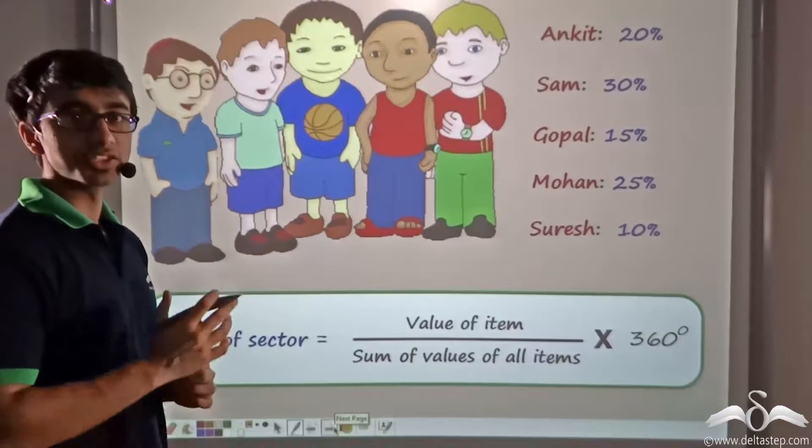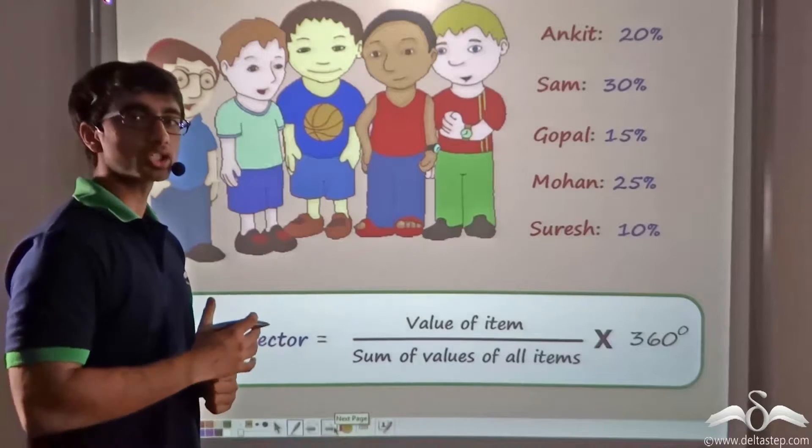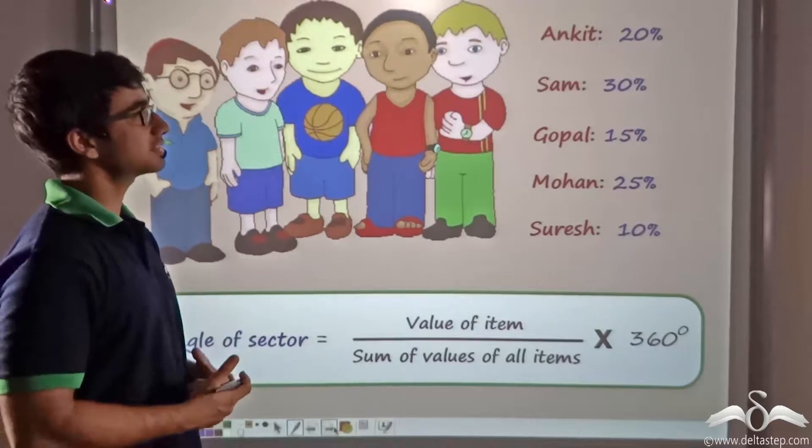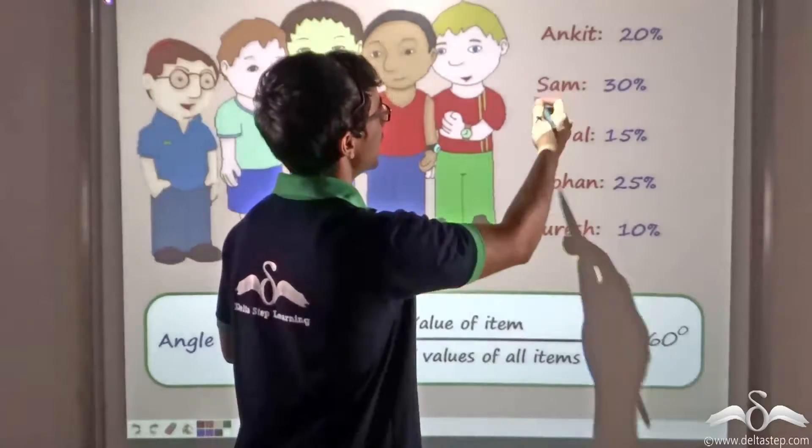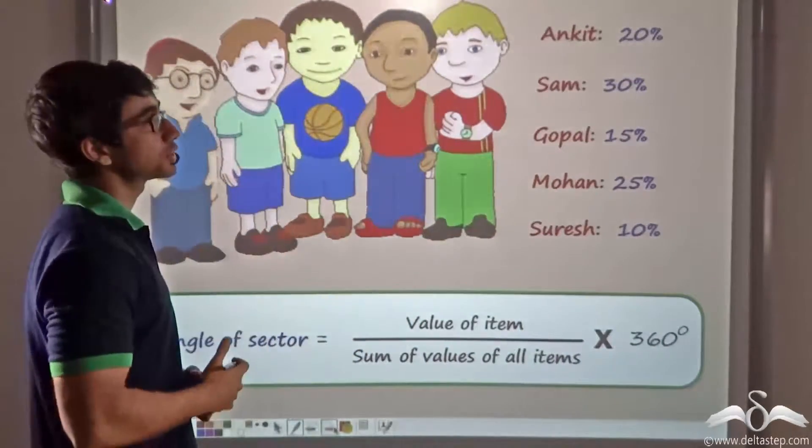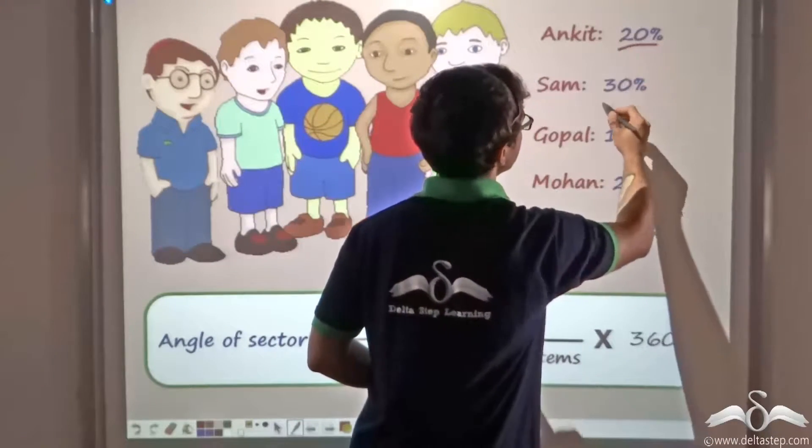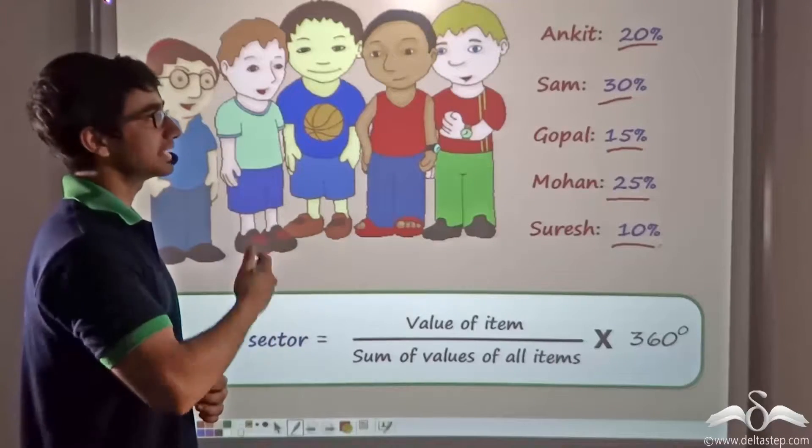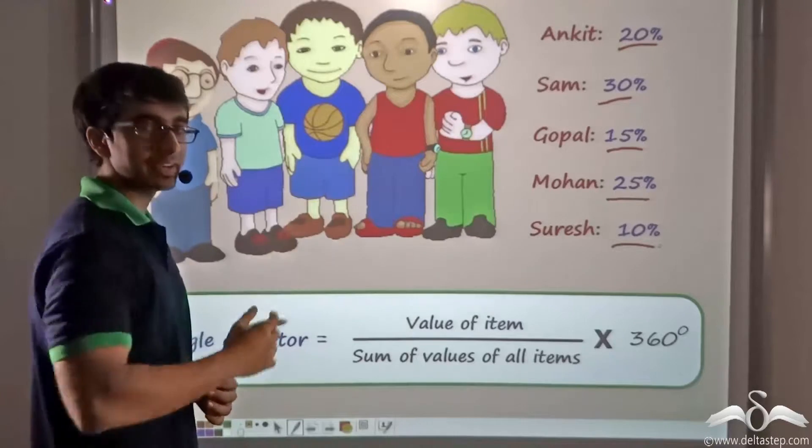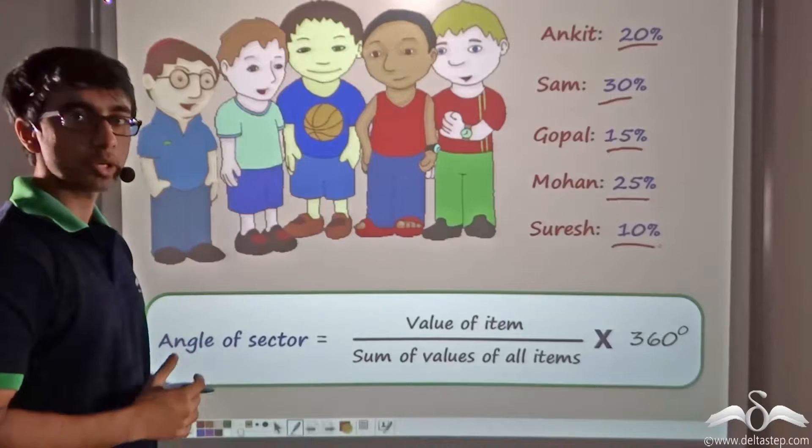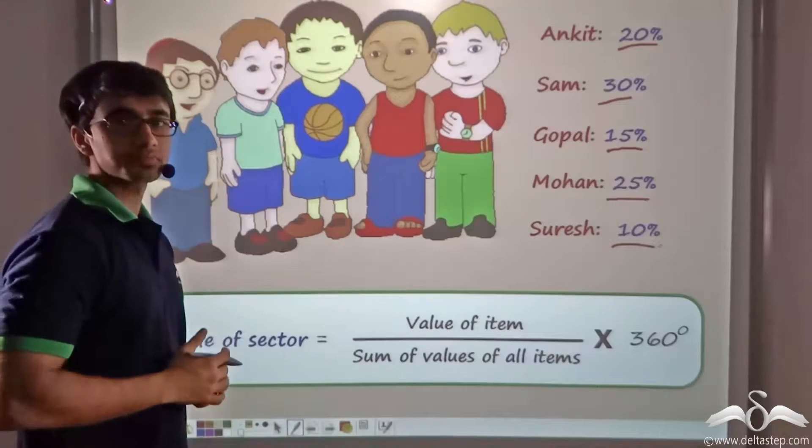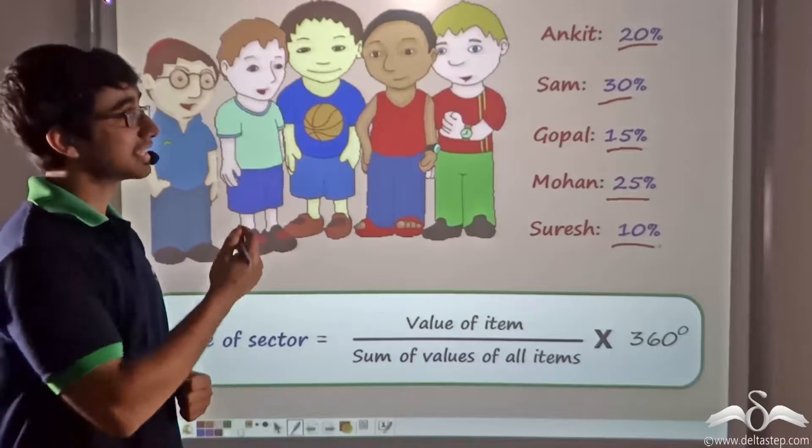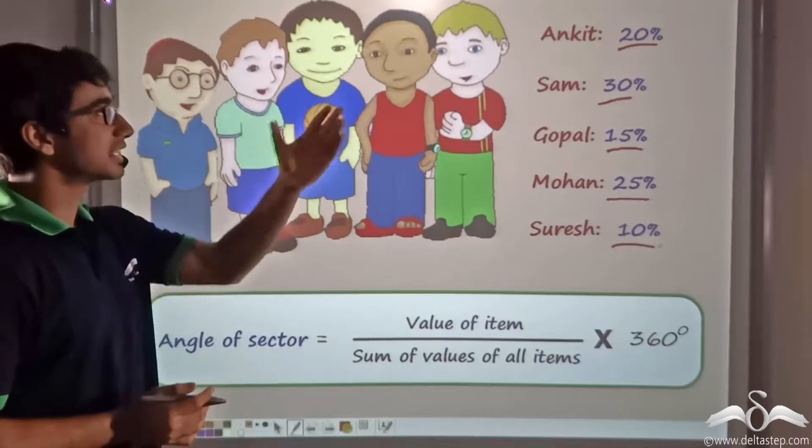We have a certain situation. A farmer wanted to leave behind his circular plot of land to his five sons. The farmer wanted to divide this circular plot of land between his five sons in the following percentages: Ankit, Sam, Gopal, Mohan and Suresh. These sons were to receive the land in the proportions of 20%, 30%, 15%, 25% and 10%. Now these sons started to quarrel because they didn't know how much 20% or 30% actually corresponded to in terms of area. Let us help them find out how they can divide the plot of land in the percentages that have been given.